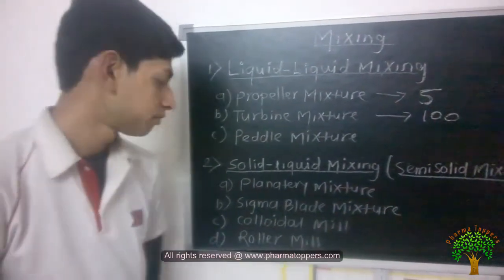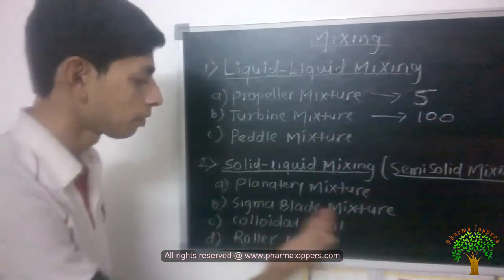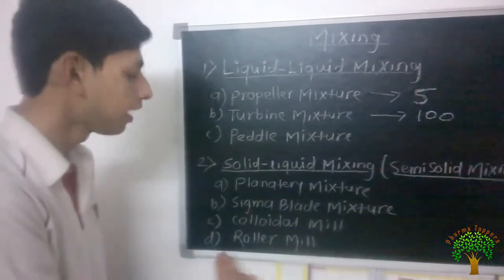There are only 4 mixtures: planetary mixture, sigma blade mixture, boreal mill and roller mill.